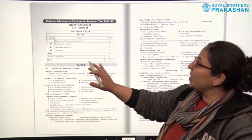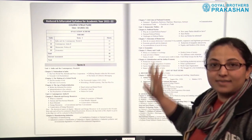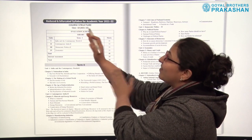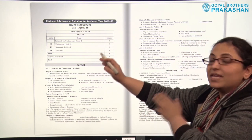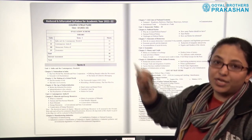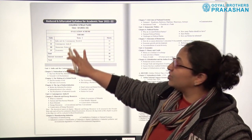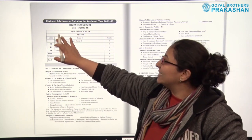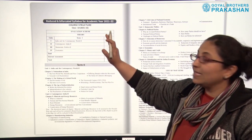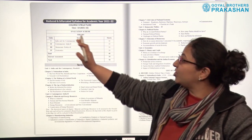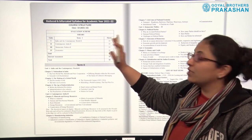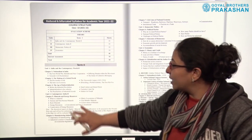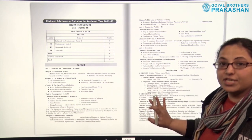To start with, we have the syllabus in the beginning. This is the reduced and bifurcated syllabus for academic year 2021 and 2022. The course structure is given here along with the evaluation scheme. The syllabus is here and the marks allotted to each chapter or each unit are on the right side. After that, we have the syllabus for term 2.